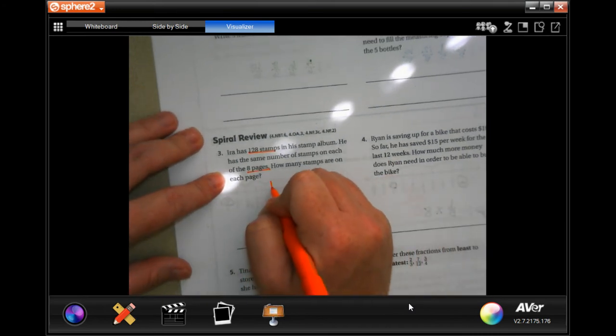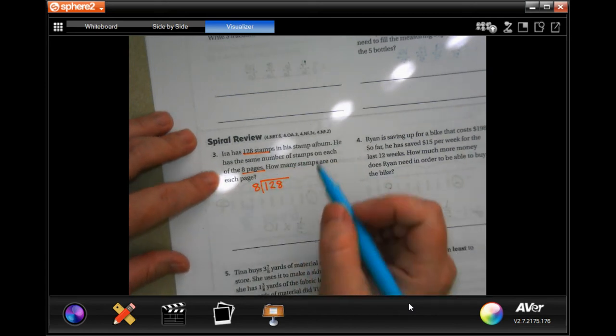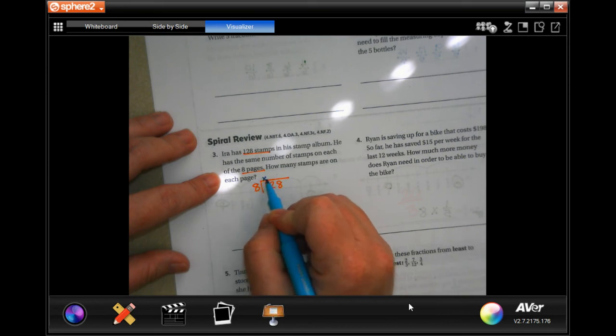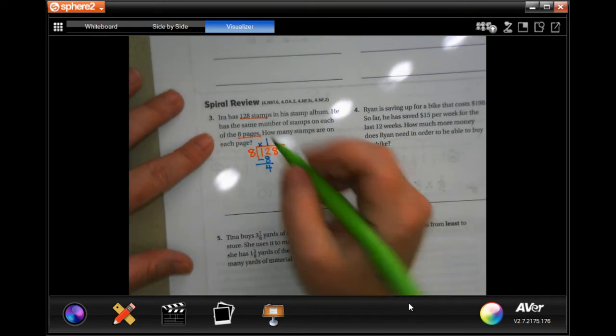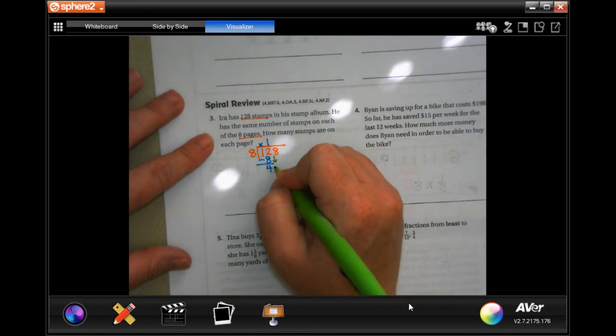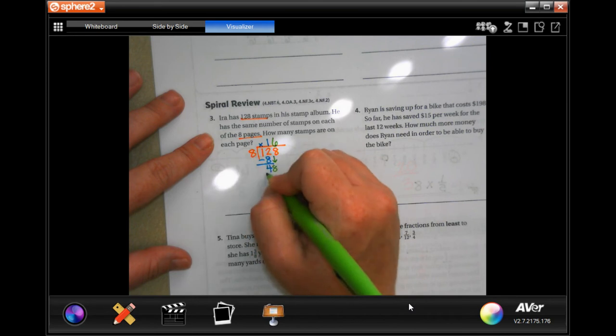Well, 128, we're going to divide that by eight. So eight will not go into one, it'll go into twelve one time. One times eight is eight, subtract and get four. All right, four is smaller than eight, so I can bring down this eight. Well, eight goes into 48 six times, and six times eight is 48, subtract is zero.